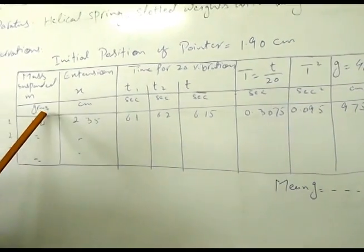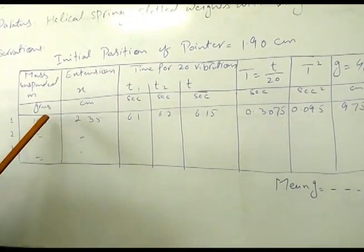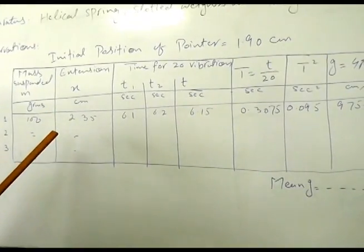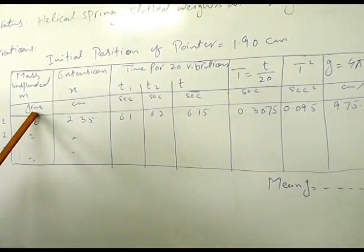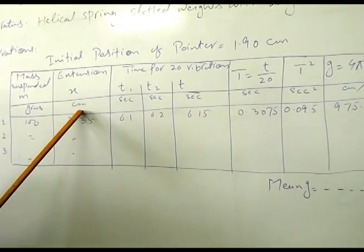In units we have to be so careful because we have to take all the readings in the same system of unit. If we are taking the mass in grams, then extension must be in centimeters.